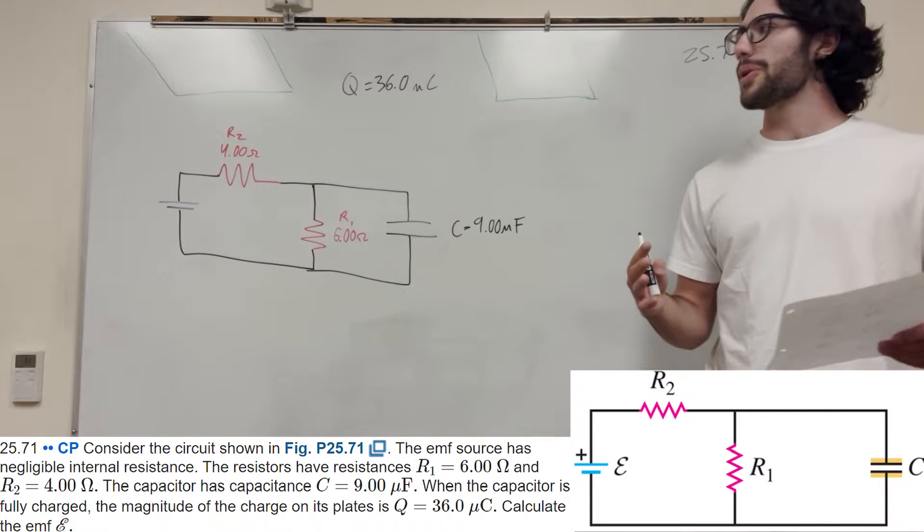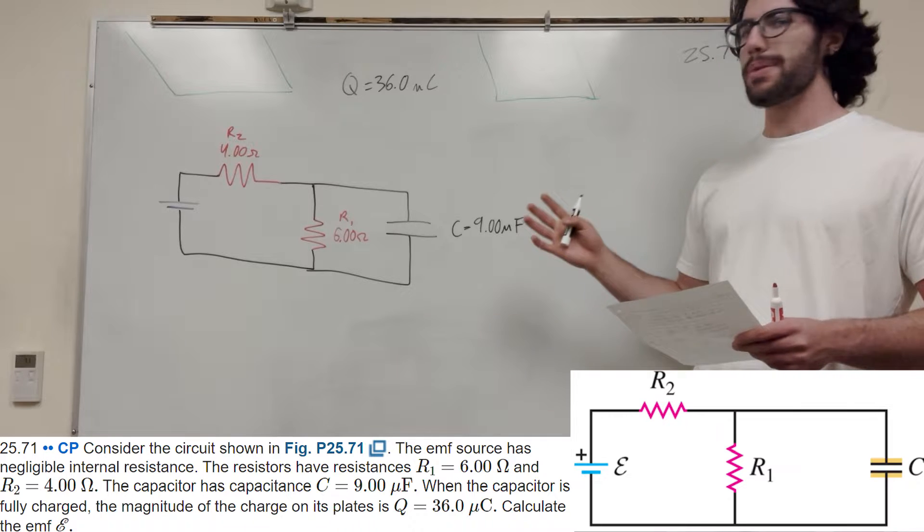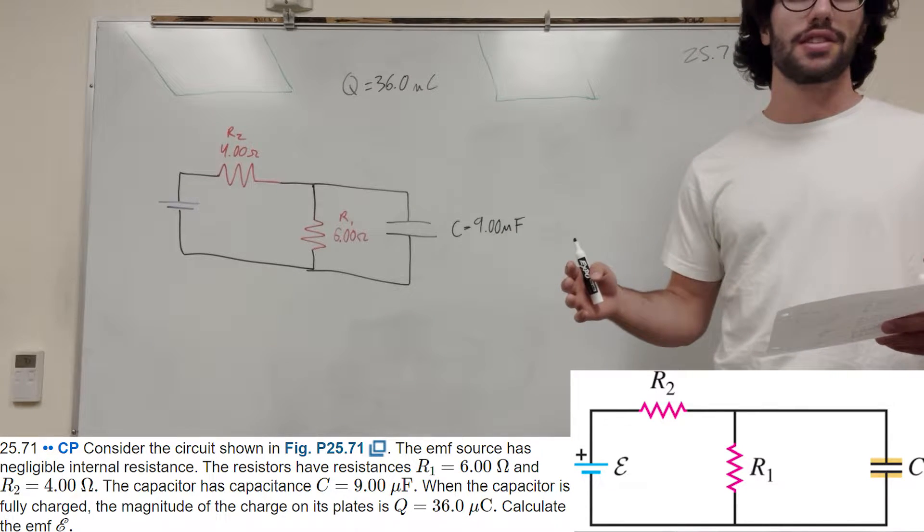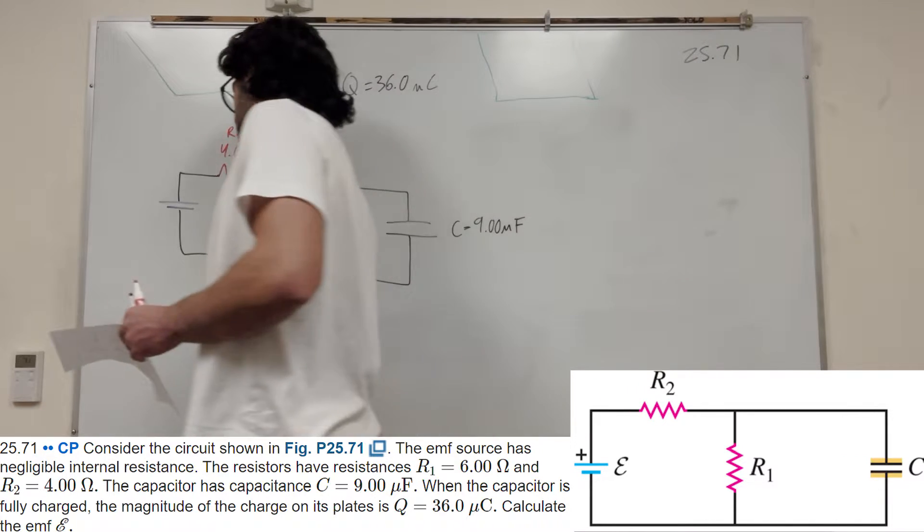What's up Calv gang? Alright so we got this circuit problem here. We have a capacitor and two resistors and a battery and it wants us to calculate the EMF. So we're looking for the EMF.